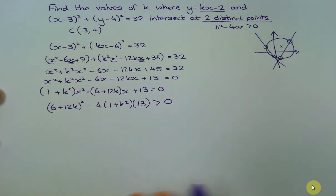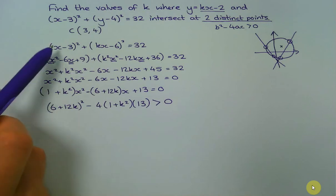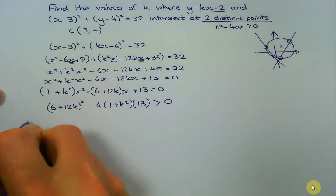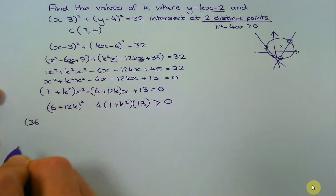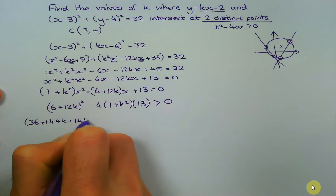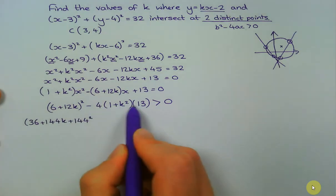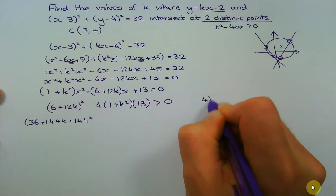So once again I'm in a similar situation to what I was up here. I'm just going to expand. So I'm going to have 36 + 144k + 144k². Now here I will find it easier to imagine it like this.